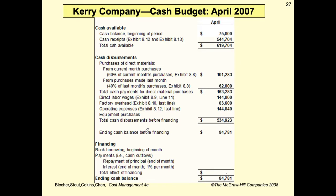The example for Carrie Company's cash budget for April 2007 illustrates the three sections: cash available, cash disbursements, and financing.